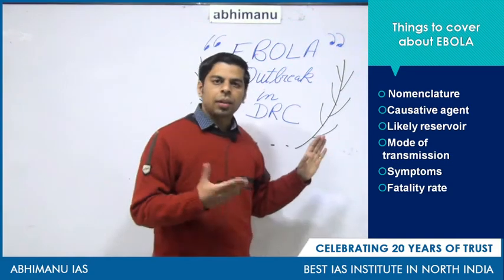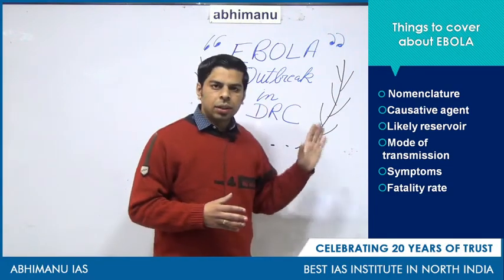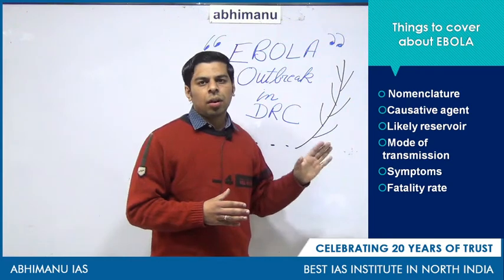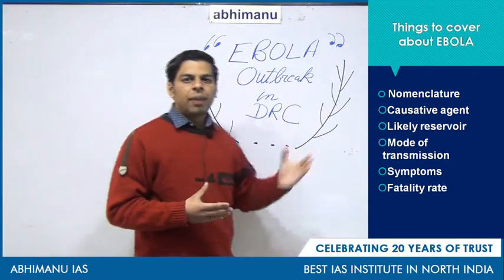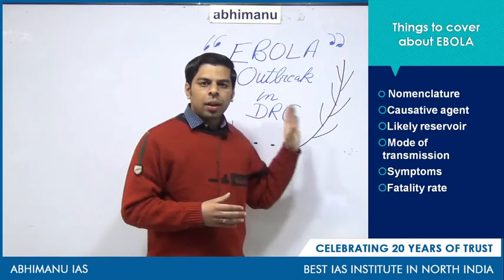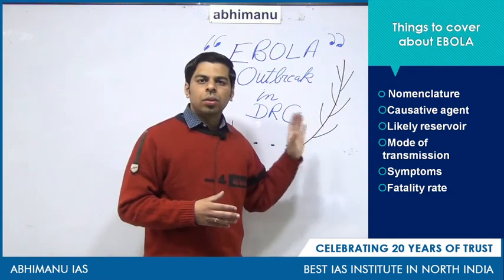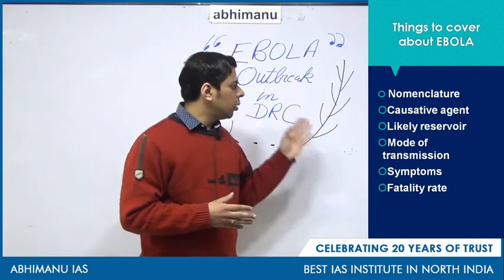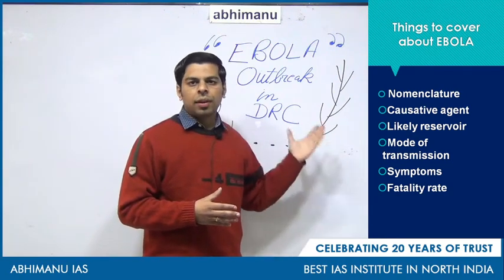Ebola is once again a zoonotic disease, like corona. The likely reservoir is linked clearly to the Pteropodidae family, which is the bat family. The flying fox or bat species is the main culprit — tribes in 1976 used to eat the meat of bat species, and once infected bat meat was ingested, human-to-human transmission took place. This disease has also been found transmitted to other primate species like gorillas and chimpanzees, as well as antelopes and other large mammals, as it is an obligate parasite.